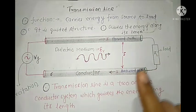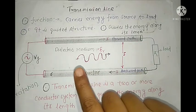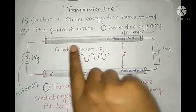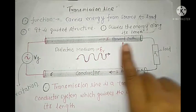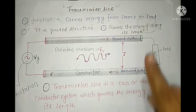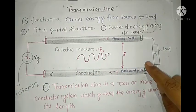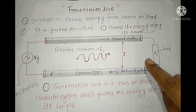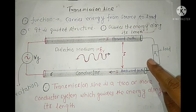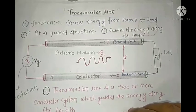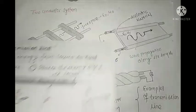Finally, we can say the transmission line is a two or more conductor system which guides the energy along its length. The main function of a transmission line is that it guides the energy from source to destination. Since it is guiding the energy, we can say it is a guiding structure. Let's see some examples of transmission lines.